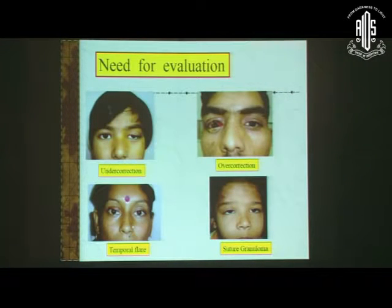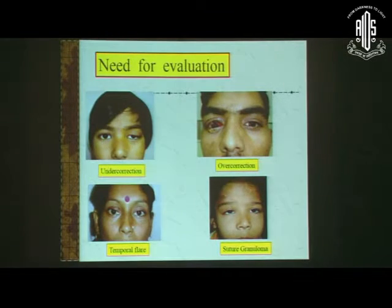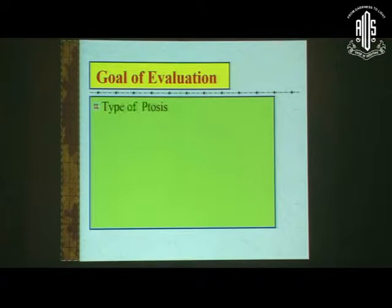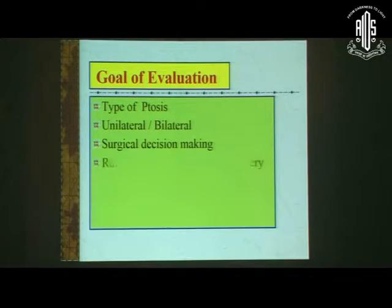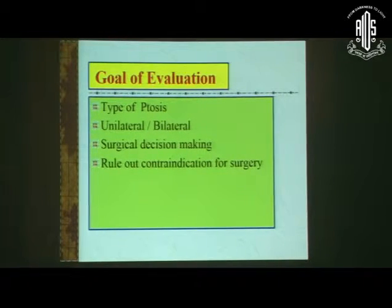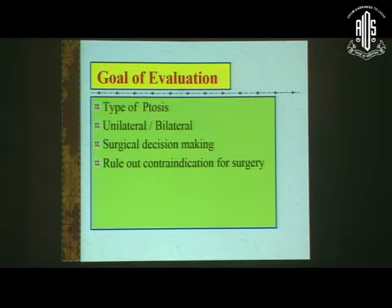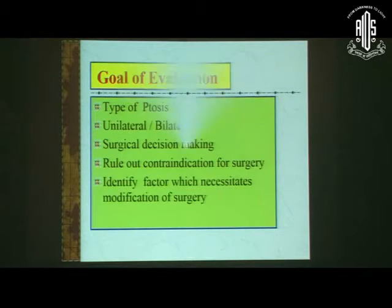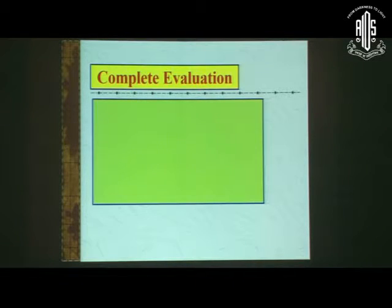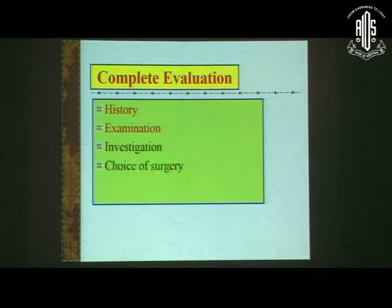So why do we need to evaluate? To avoid complications like under-correction, over-correction, temporal flare, or suture granuloma. A proper evaluation should answer: what is the type of ptosis, whether it's unilateral or bilateral, what surgical decision should be made, any contraindications for surgery, and any factors necessitating a change in surgery. A complete evaluation includes history, examination, investigation, and choice of surgery.